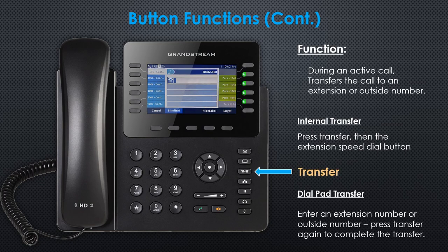The transfer button. During an active call, this button will transfer your call to an internal extension or outside number. To transfer a caller directly to an internal extension, simply press the transfer button, then the extension speed dial button. If entering an extension number or outside number using your dial pad, press the transfer button again to complete the transfer. Remember to dial 9 first for an outside call.